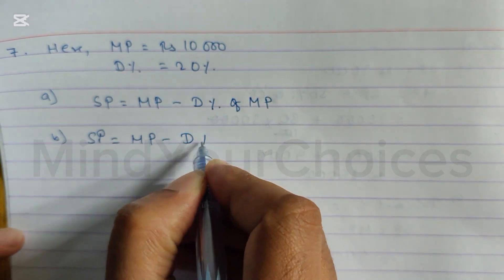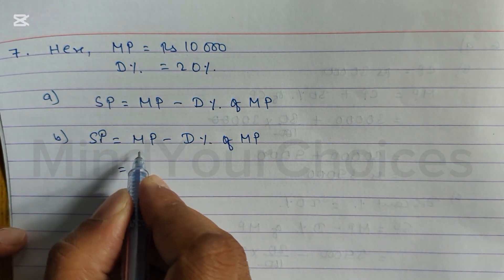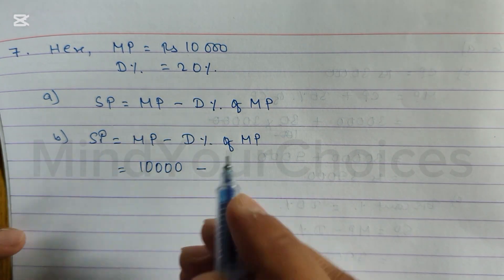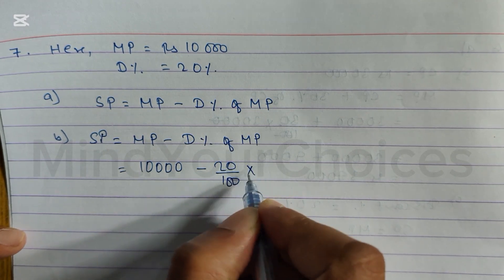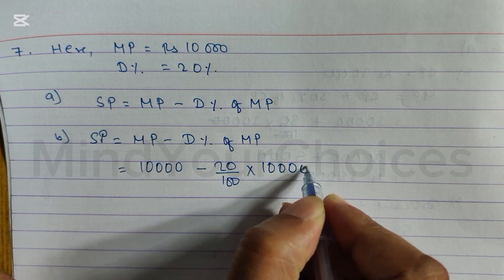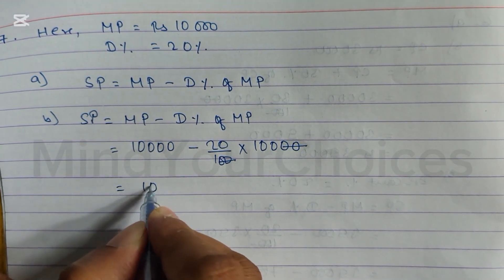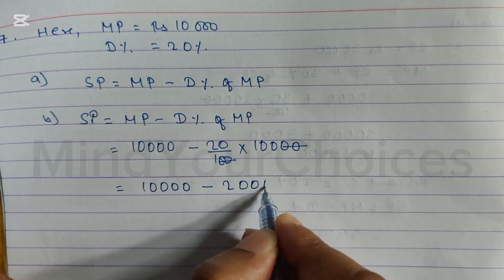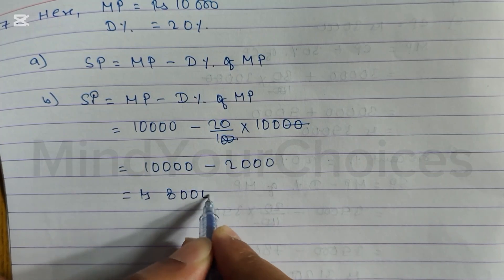MP value is 10,000, so we write 10,000 minus discount percent is 20%, so 20 divided by 100 into MP. MP is 10,000. After canceling and calculation: 10,000 minus 2,000 equals Rs 8,000.